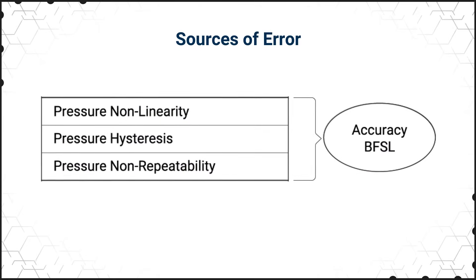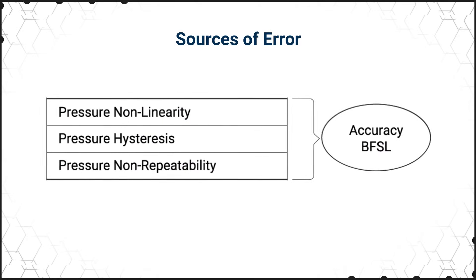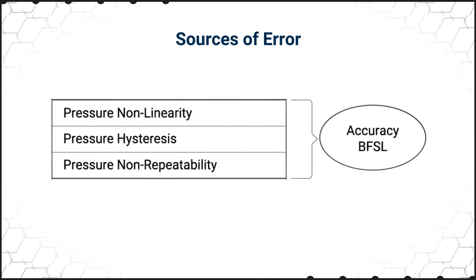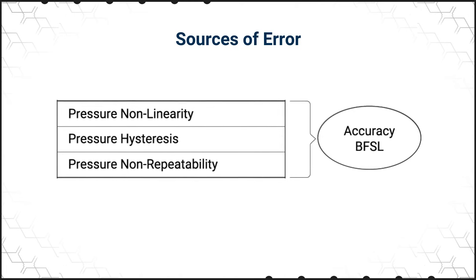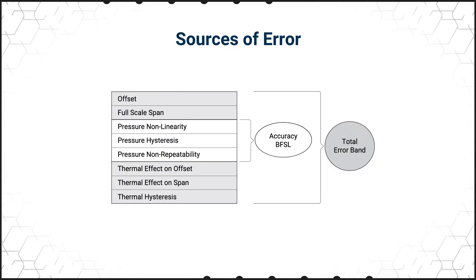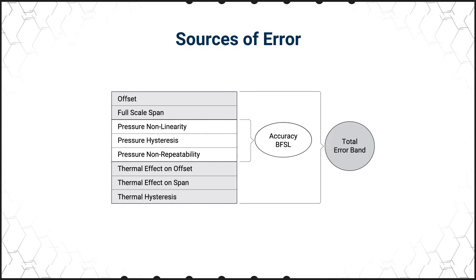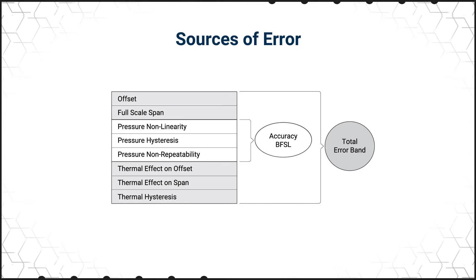Accuracy includes the effects of non-linearity, hysteresis, and non-repeatability, and is a commonly used specification so it's included for comparison with competing sensors. Accuracy is a component of TEB, which includes additional error sources that make it the most comprehensive measurement of a sensor's true accuracy and represents the worst error the sensor could experience.